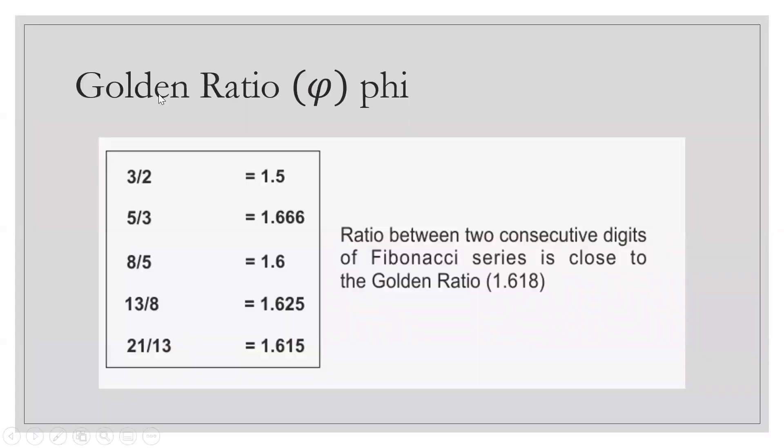Now, are you familiar with this? The golden ratio or phi. The golden ratio is the ratio between two consecutive digits of Fibonacci series, which is close to the golden ratio 1.618.